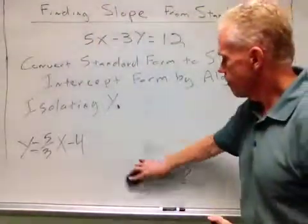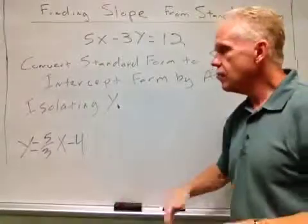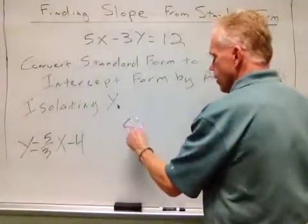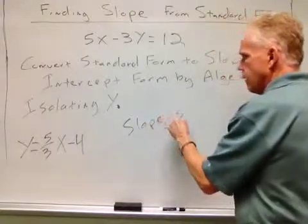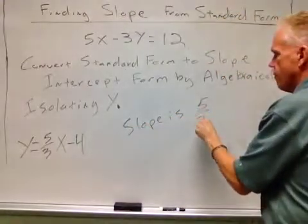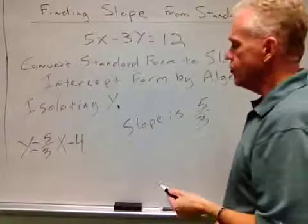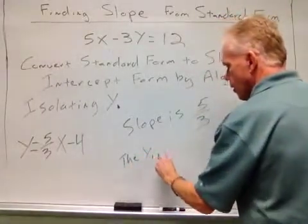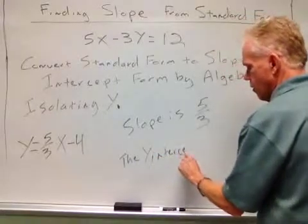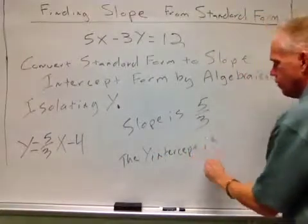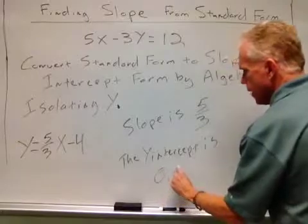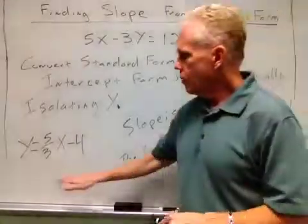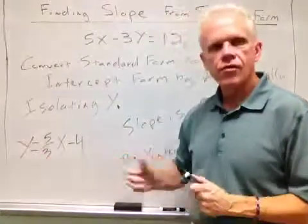From slope-intercept form, we can easily know that the slope of this line is 5/3. The y-intercept is (0, -4). So we have the slope and y-intercept.